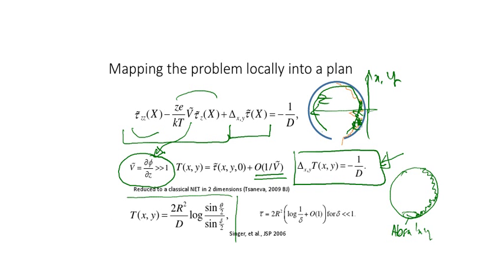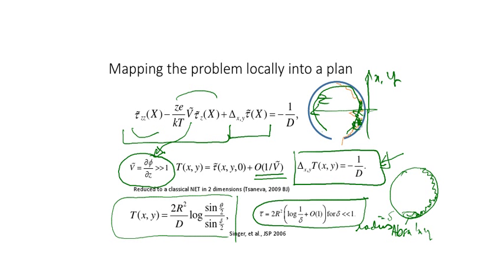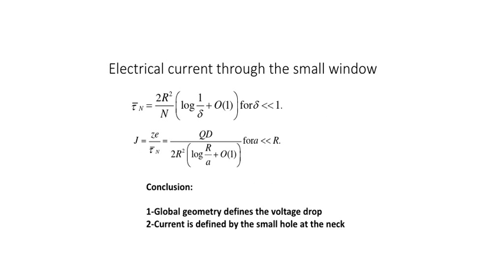The mean first passage time solution is well known: tau equals 2R-squared divided by D times log of theta divided by delta, where delta is the radius of the small hole. This is proportional to R-squared and log of 1/delta. The MFPT for N ions is given by the single-particle time divided by N, and the flux of particles is the total charge divided by the escape time, in the limit where the absorbing window radius is small compared to the ball radius.